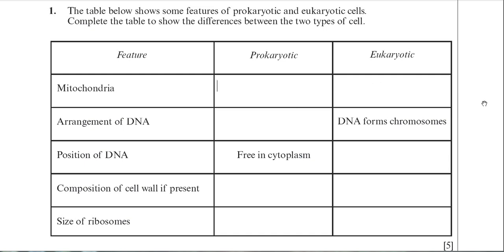Next is the arrangement of DNA. This has caused problems for some students. For eukaryotic cells, DNA forms chromosomes. For the prokaryote, there are two different types of DNA — you can have plasmid DNA, which is circular, or another strand of DNA in the cytoplasm. The answer they were looking for was circular DNA.